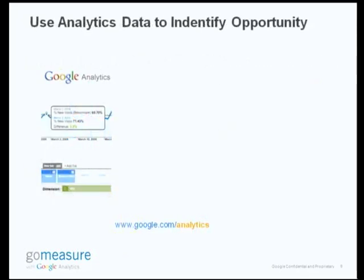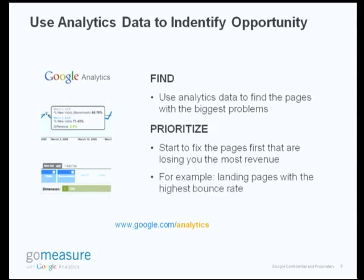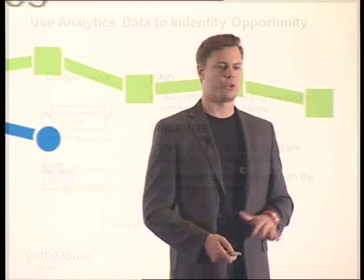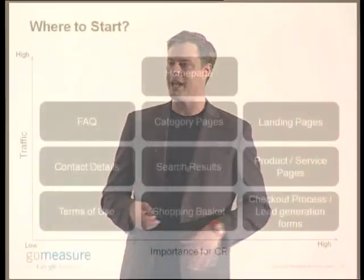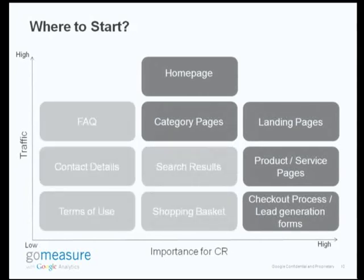So how do you go about doing that? You use your GA data, your Google Analytics data, or whatever analytics package you're using, and you find the issues. For example, you find where in your landing pages there's the highest bounce rate. You're driving traffic to your landing page, high bounce rate — you're losing money. So that's where you focus on testing. Another way is creating a matrix — sit down with your team, brainstorm which parts of your site are important for conversion and which parts receive the most traffic.